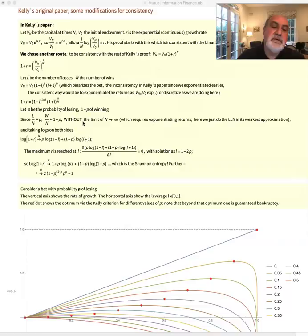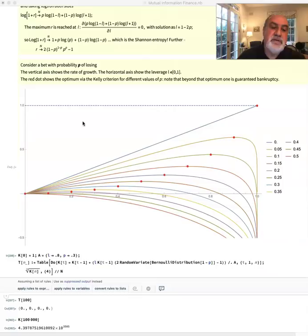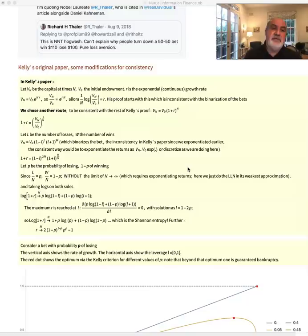So based on that, there exists an optimal combination, not combination, an optimal point. I'm going to see it here, it's a red dot, an optimal L.